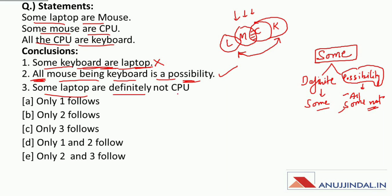Now: some laptop are definitely not CPU. Between laptop and CPU there is no direct relation, which means the definite statement will be absolutely incorrect. Therefore, the correct answer to this question is B — only two follows. If all the concepts from the previous session were clear, you can solve these questions very easily and in very less time.